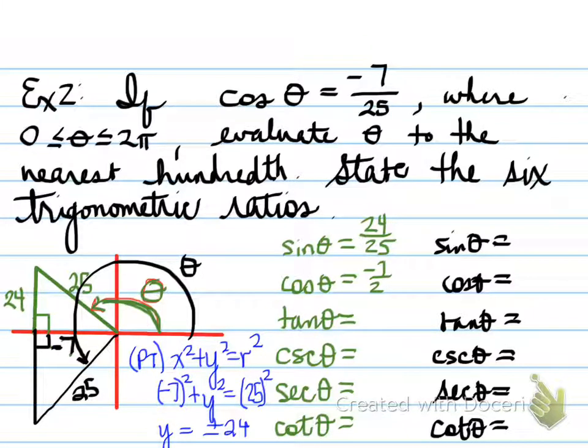So sine θ is 24/25. Cosine θ is equal to -7/25. Tangent of θ is equal to 24/25. Sorry, -24/7. And we do the same for cosecant, secant, and cotangent. And these values here represent the six trigonometric ratios.